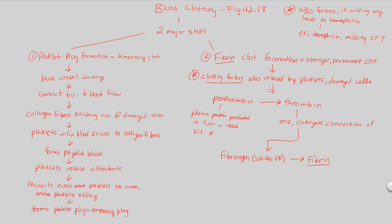Notice this is fibrin clot formation — we have formed the key molecule. Fibrin is insoluble, whereas fibrinogen was soluble. We go from a soluble substance to an insoluble one because we're trying to create a thick, strong barrier to blood leaving the vessel — something blood cannot push through or mix with. Fibrin is only produced if thrombin is made, and thrombin is only made if clotting factors are released by the platelets at the platelet plug.